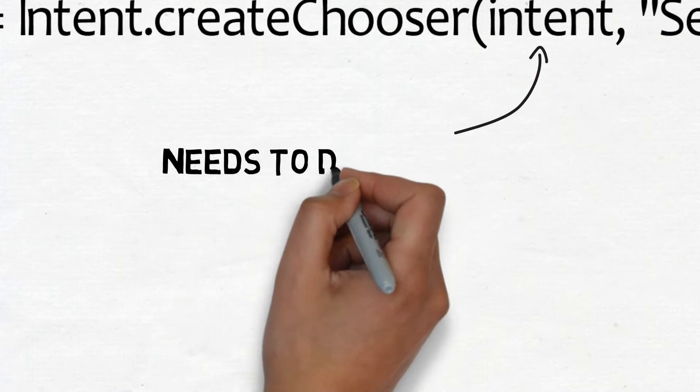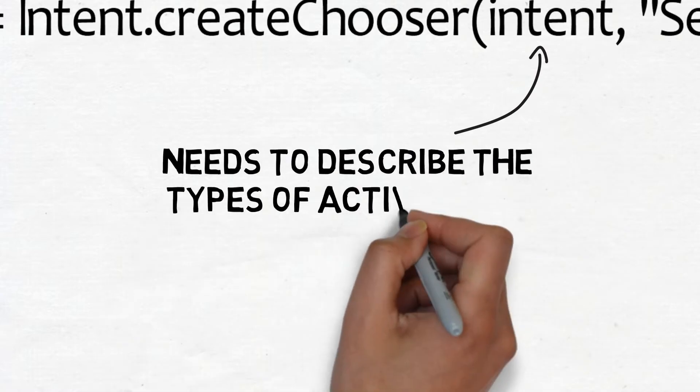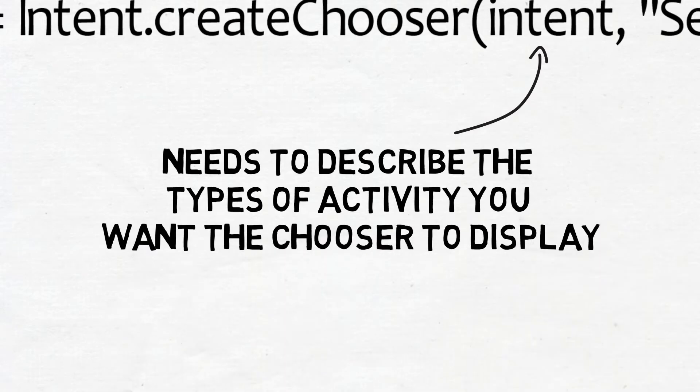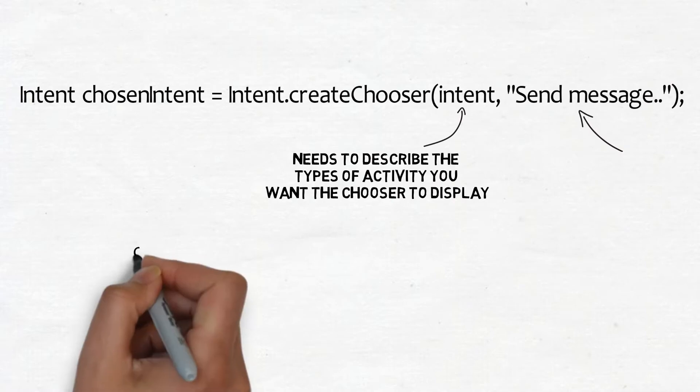The Intent parameter needs to describe the types of activity you want the chooser to display. You can use the same intent we created earlier as this specifies that we want to use action send with textual data.